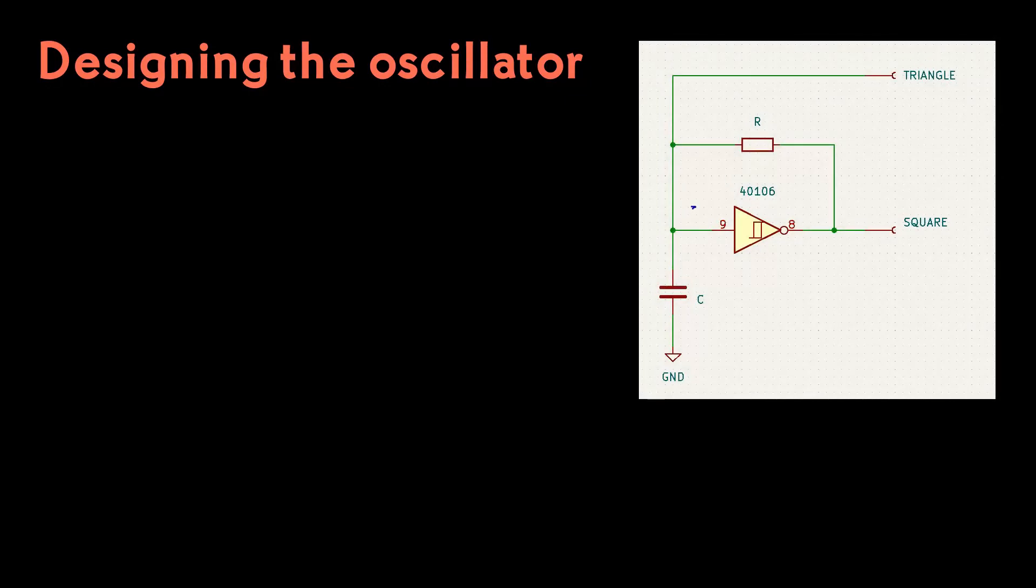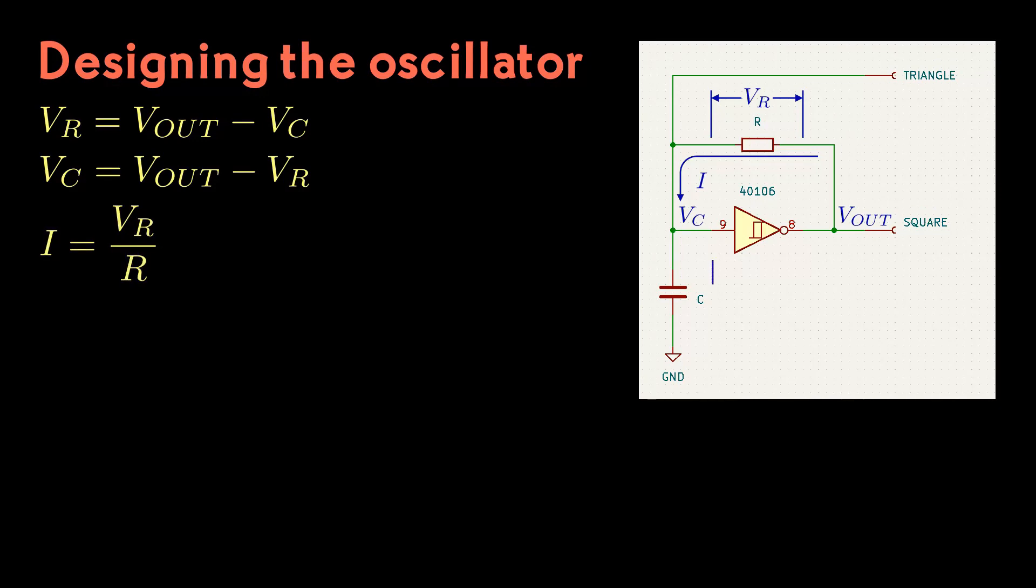Now let's use this Schmitt trigger to make an oscillator. We'll use a circuit like this one. Call the voltage across the capacitor V sub C and the voltage at the trigger output V sub OUT. We'll also want a name for the voltage across the resistor. Call it V sub R. Of course, Kirchhoff's voltage law lets us compute any of these voltages from the other two. Let I be the current through the resistor. When the current is flowing from right to left, as shown here, the capacitor is charging. When the voltage on the capacitor hits the upper threshold, the output voltage will switch and the capacitor will discharge. Then the current will flow the other way until the voltage on the capacitor reaches the lower threshold, the output switches, and the capacitor starts charging again. Either way, Ohm's law gives us the current.